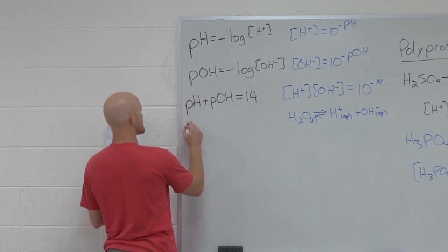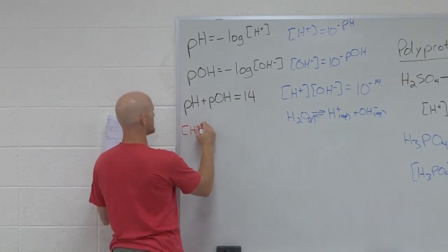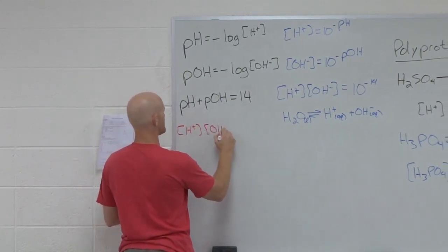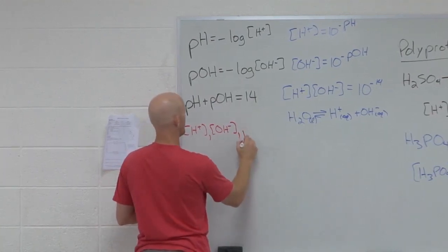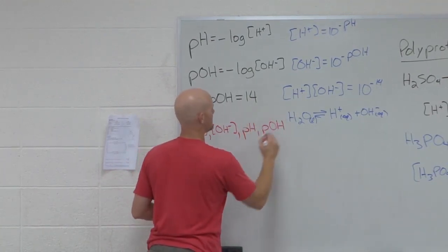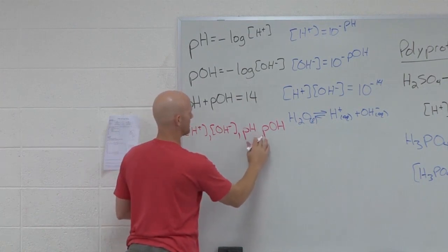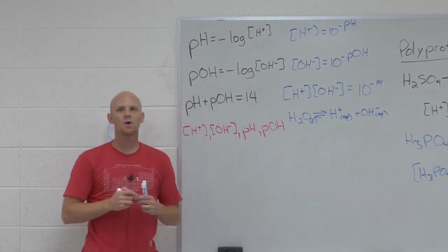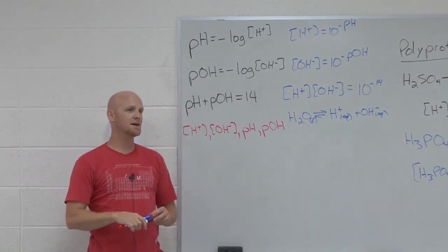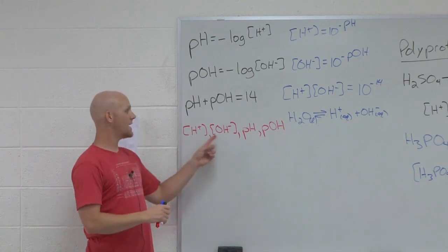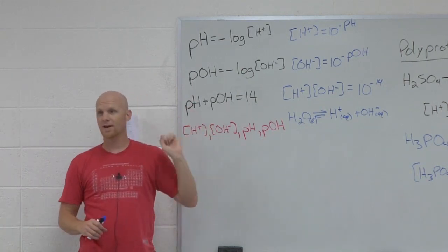So here's the deal. We've now got four things: hydrogen ion concentration, hydroxide ion concentration, pH, pOH. Four different things here. And they're all mathematically interdependent. They depend on one another. If you know any one of these four, you should be able to calculate the other three.